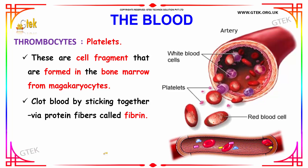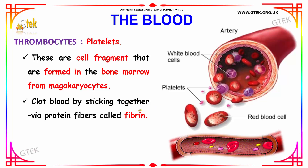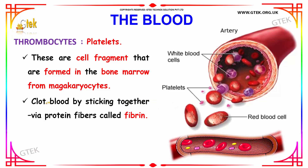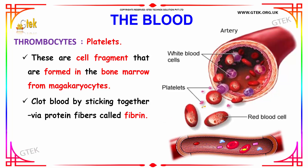Next we have thrombocytes, which are the platelets. These are cell fragments formed in the bone marrow from megakaryocytes. Their function is to clot the blood by sticking together via protein fibers called fibrin. This is how platelets help in the clotting of blood.